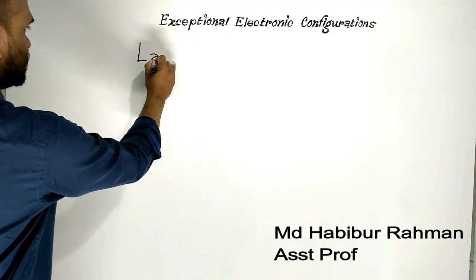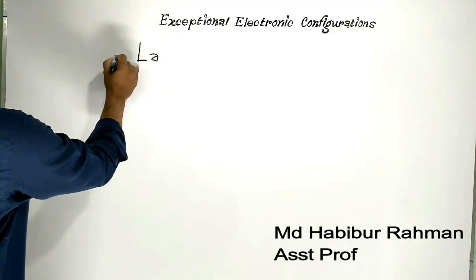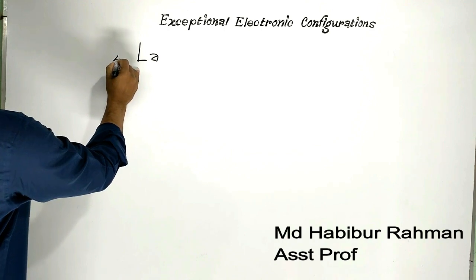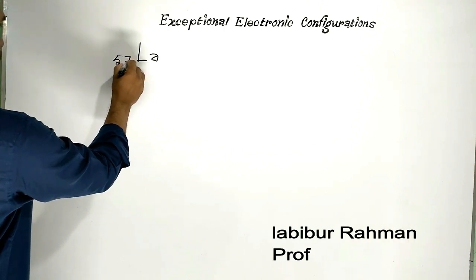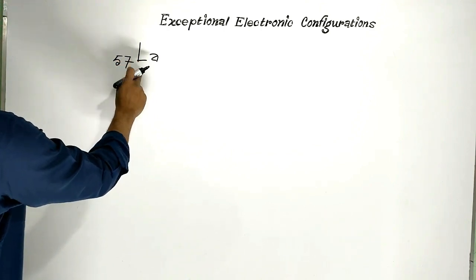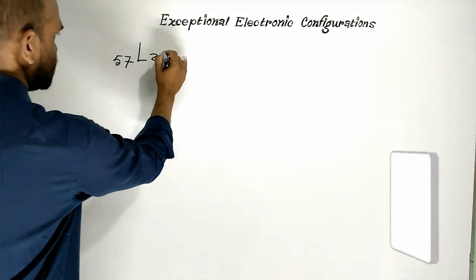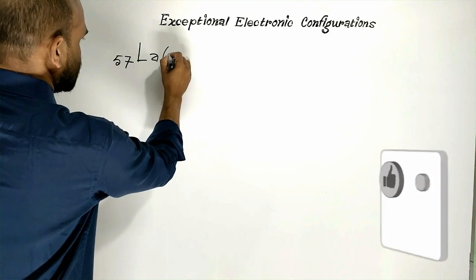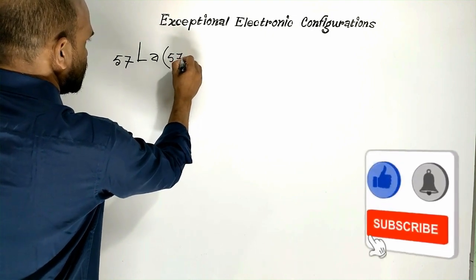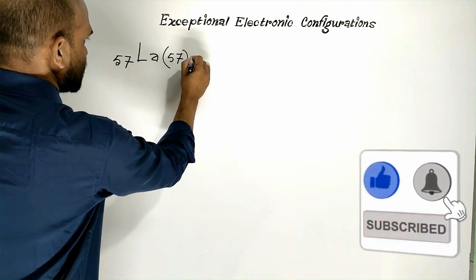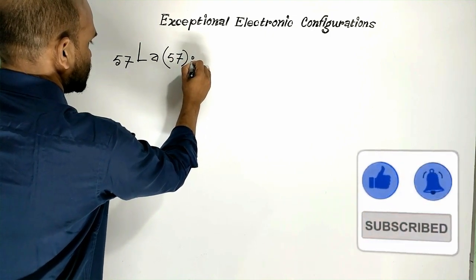Lanthanum. Its atomic number is 57, which means it has 57 electrons.